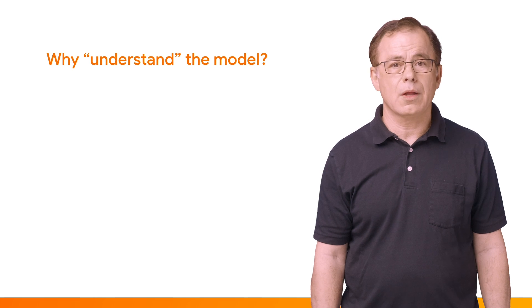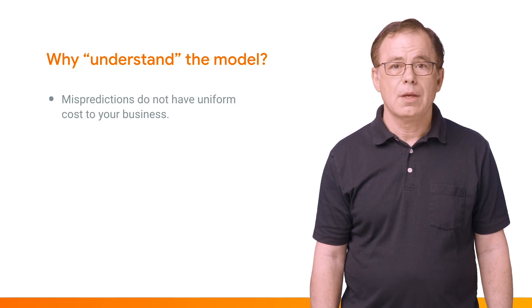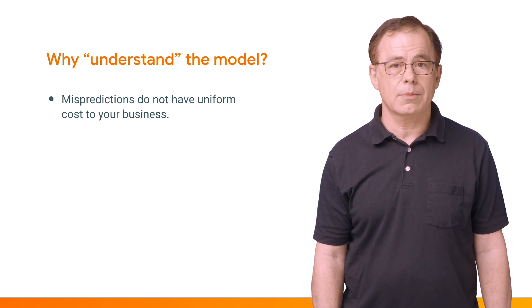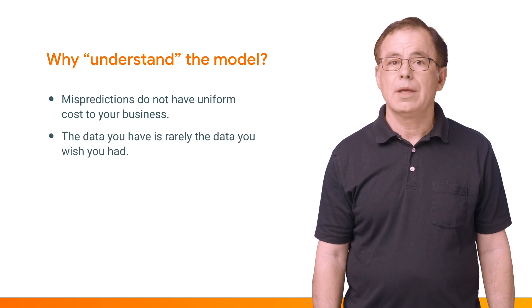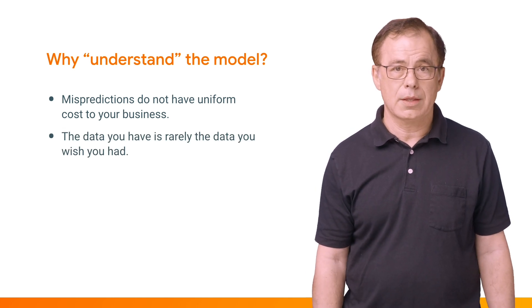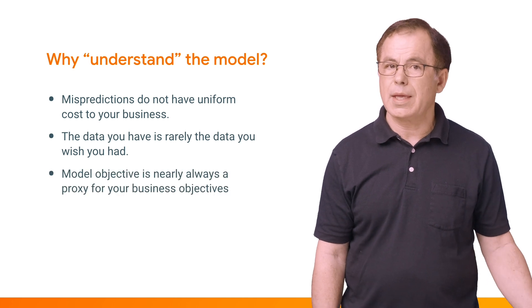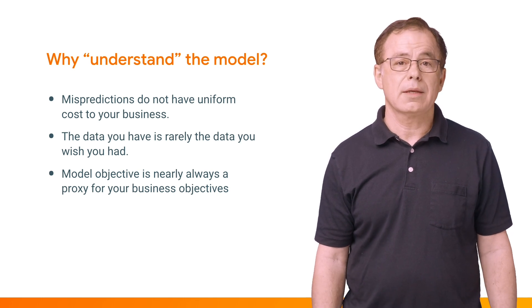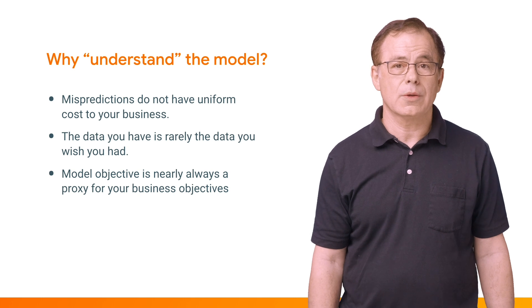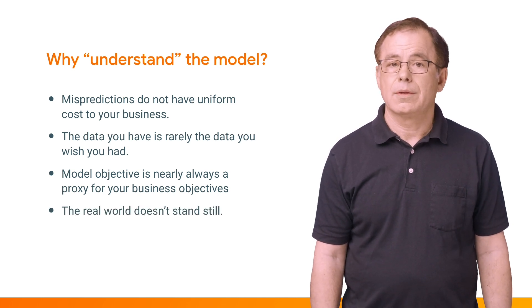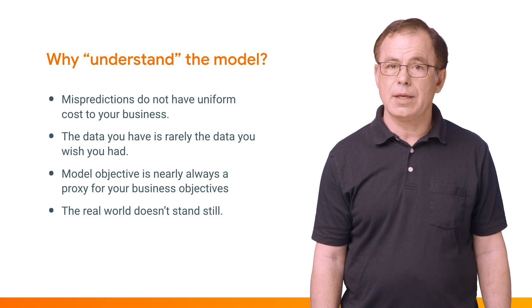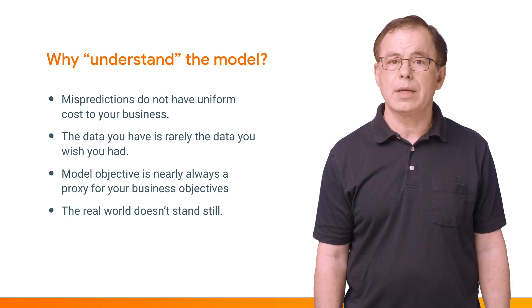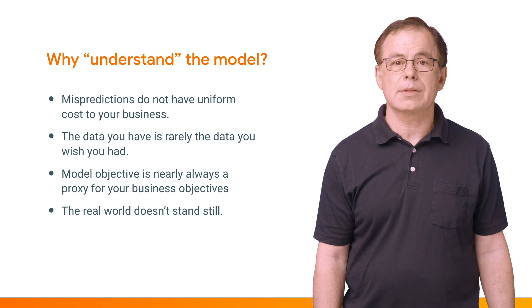Remember that it's not just overall model performance. Mispredictions on different parts of your data do not have the same uniform cost to your business. The data that you have is almost never the data that you wish you had. And your model's objectives, things like AUC, are really just proxies for your actual business objectives, things like knowing how much inventory to order. Finally, the real world doesn't stand still, so your data and business conditions are constantly changing. That's why you need to continue to monitor and analyze how your model reacts to changes.